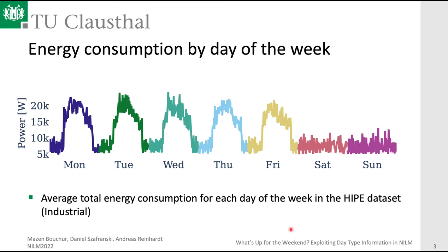It's not always the case only in university buildings — it seems also the case in industrial settings. Here we are looking at the HIPE dataset, which has been captured in a factory. You can see a pattern: it's not as clear that average consumption drops during work days, but on Saturday and Sunday the average consumption is clearly much lower than on work days.